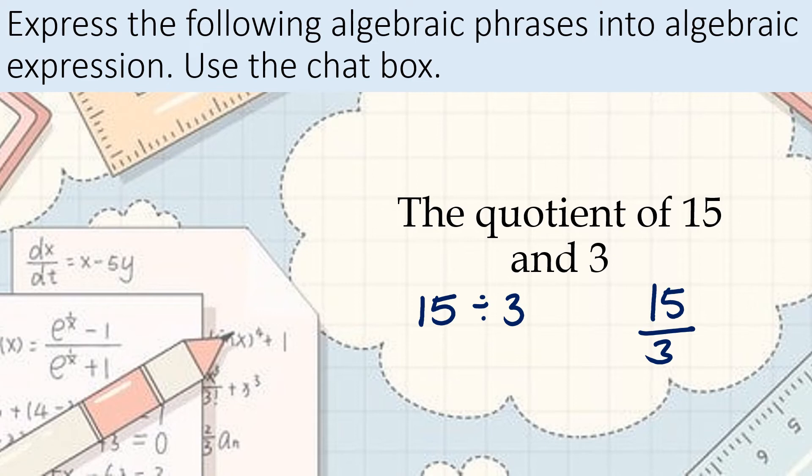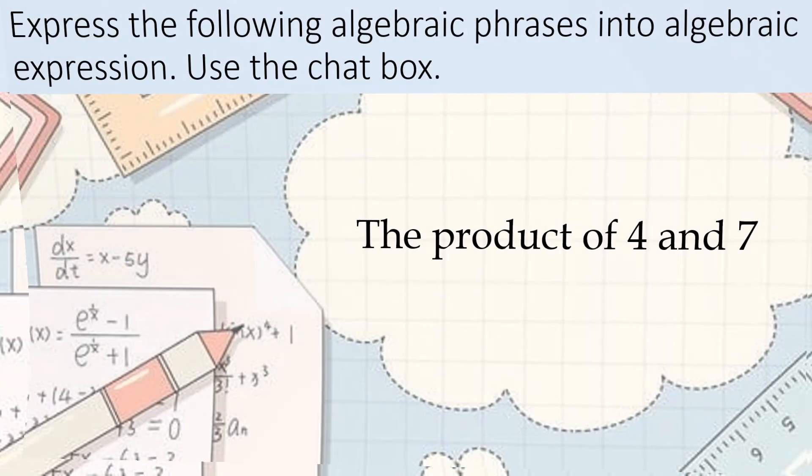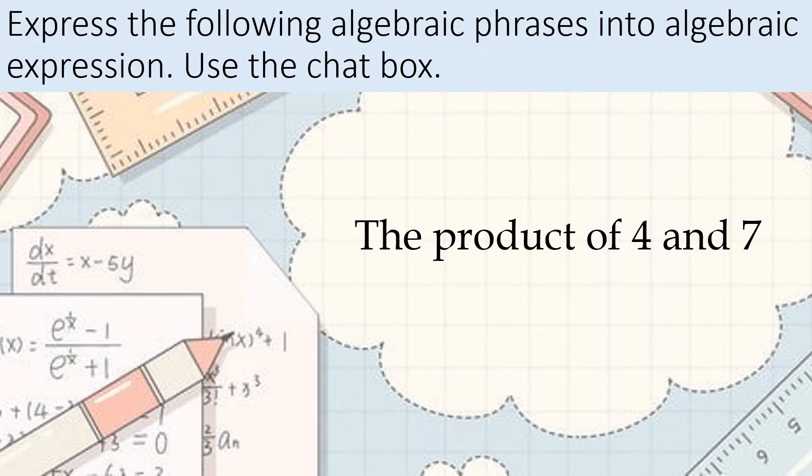Next. The product of 4 and 7. Product of 4 and 7, so that is 4 times 7. You can also use parentheses, 4 parenthesis 7. It's the same thing. Product of 4 and 7, so 4 times 7.